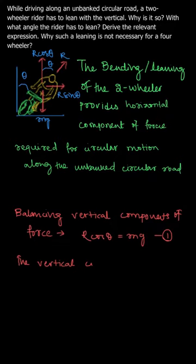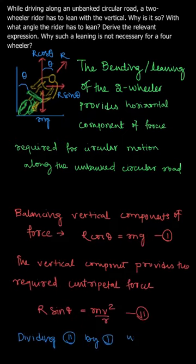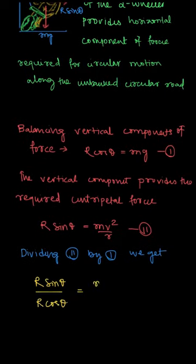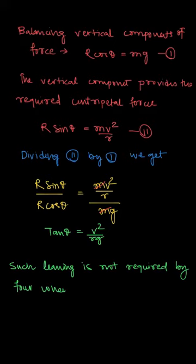Writing down the equations: for balancing the vertical component, r·cosθ = mg, and the horizontal component provides centripetal acceleration, so r·sinθ = mv²/r. Dividing equation 2 by equation 1 gives tan θ = v²/rg. This angle θ is the angle at which the two-wheeler must lean to complete circular motion.